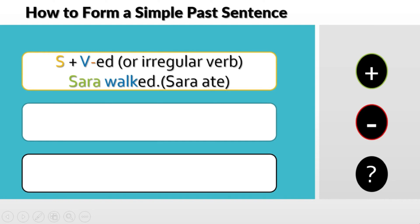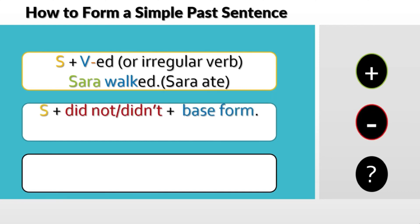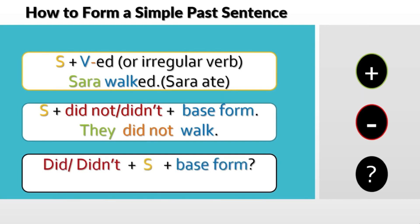For the negative simple past sentence, it would be subject plus 'did not' or 'didn't' plus the base form. So we would say: 'They did not walk.' As for the simple past question, it would be 'Did' or 'Didn't' plus subject plus base form with a question mark — for example: 'Did he walk?'